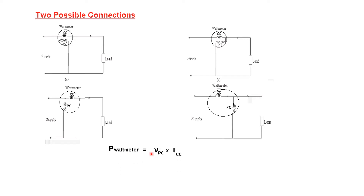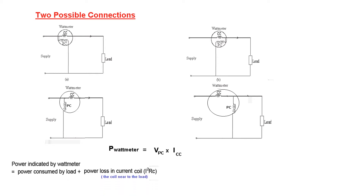The simplest formula is that the power given by the meter equals the voltage across the potential coil (V_PC) multiplied by the current through the current coil (I_CC). The commonly used formula is: power indicated by the wattmeter equals power consumed by the load plus power loss in the current coil, since the current coil is nearer to the load in Case 1.